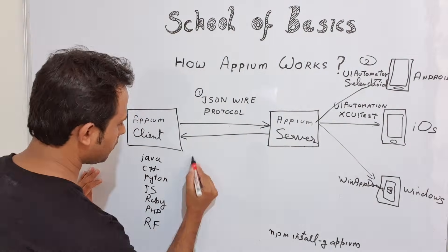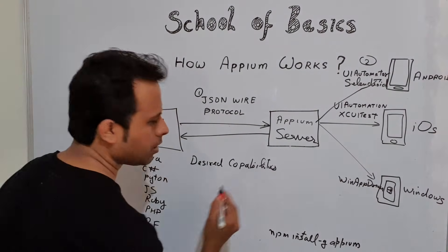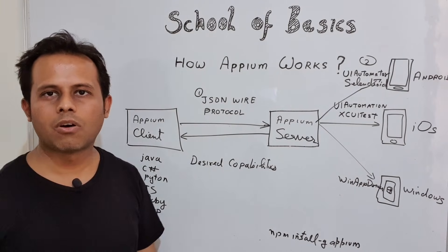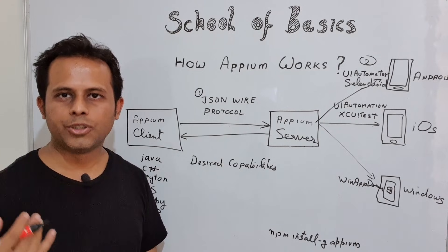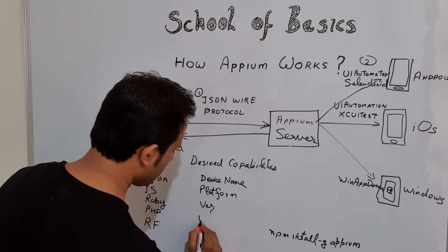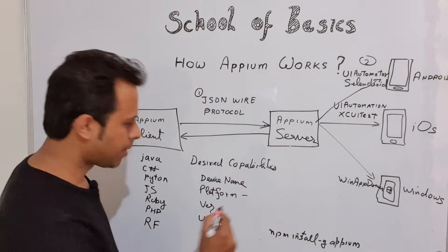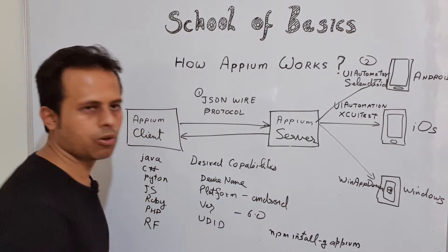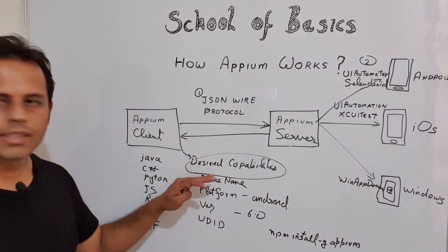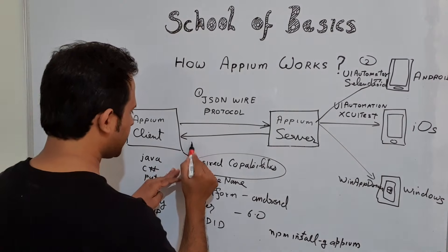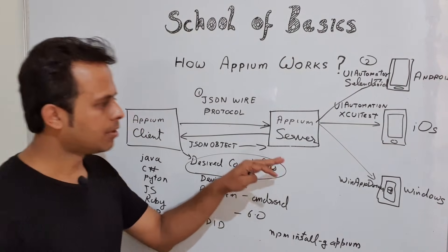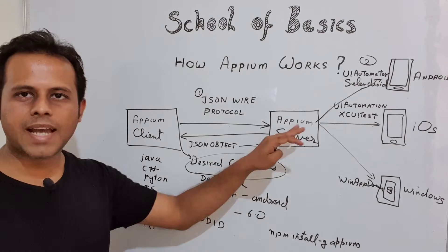The third important component is desired capabilities. Desired capabilities are a set of key-value pairs sent along with the request, containing information like device name, platform name, version, UDID, and so on. For example, the platform can be Android and version can be 6.0. When we send our request, we also send desired capabilities along with it. These go as a JSON object to the Appium server, which then performs the actions on the appropriate platform based on those capabilities.